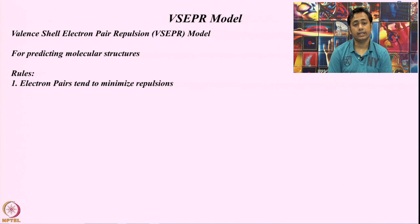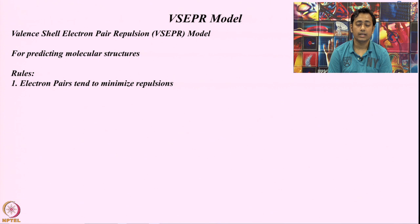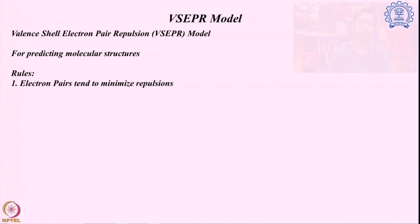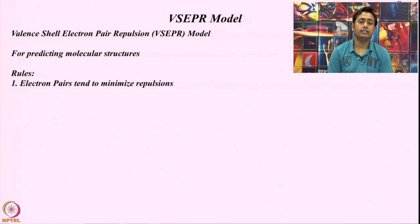The first thing that controls the structure in this model is that electron pairs are going to repel each other because they are all negatively charged. We try to arrange them in a structure such that in three dimensions the electron pairs are as far apart as possible, and the overall structure formation comes from that.